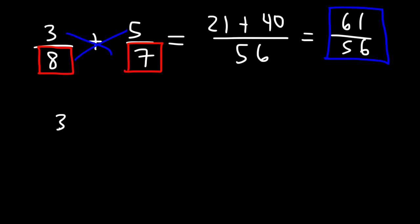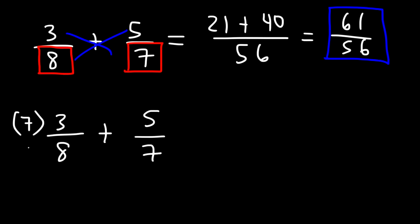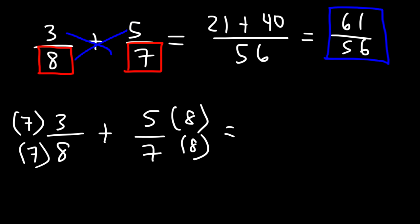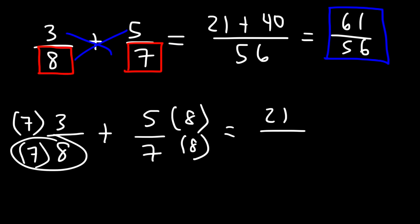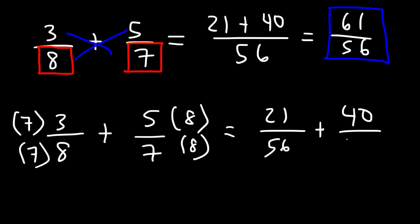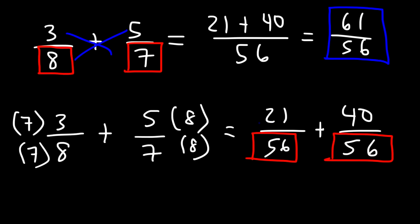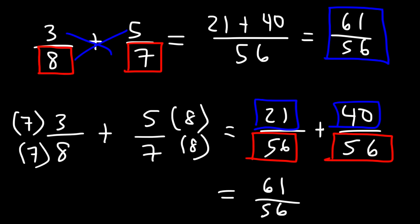Here's another method, which is especially useful when adding multiple fractions. Get a common denominator of 56 by multiplying the left fraction top and bottom by 7, and the right fraction top and bottom by 8. So 3 times 7 is 21, and 7 times 8 is 56. Then 5 times 8 is 40, and 7 times 8 is 56. Whenever you're adding two fractions with the same denominator, add the numerators: 21 plus 40 is 61. We get the same answer of 61 over 56.